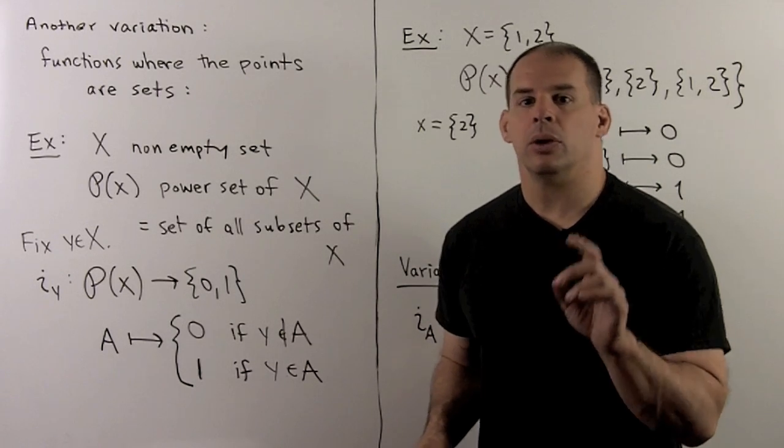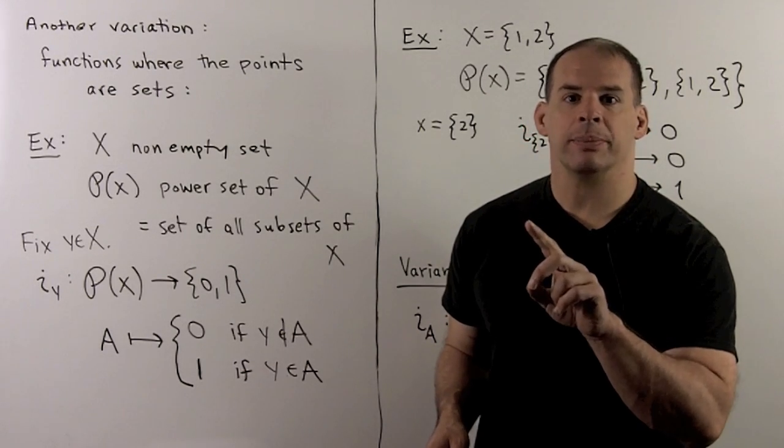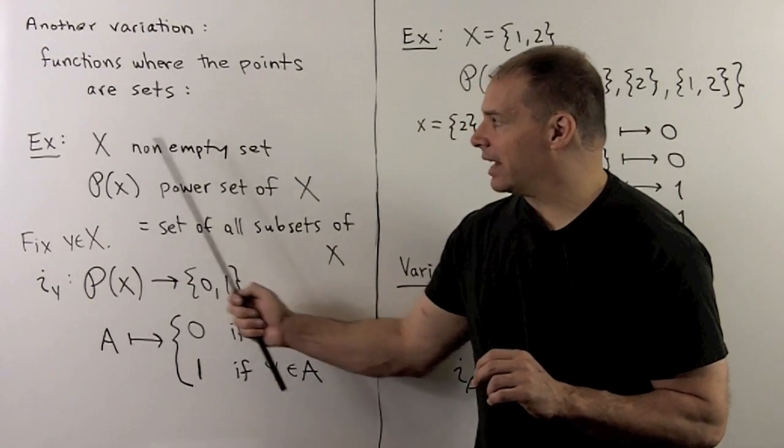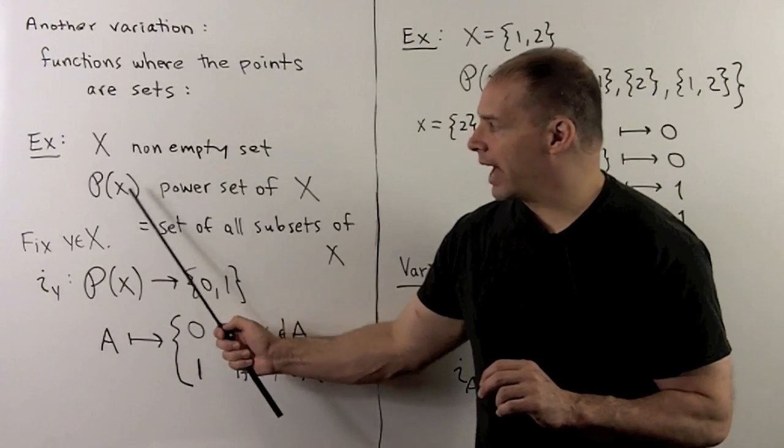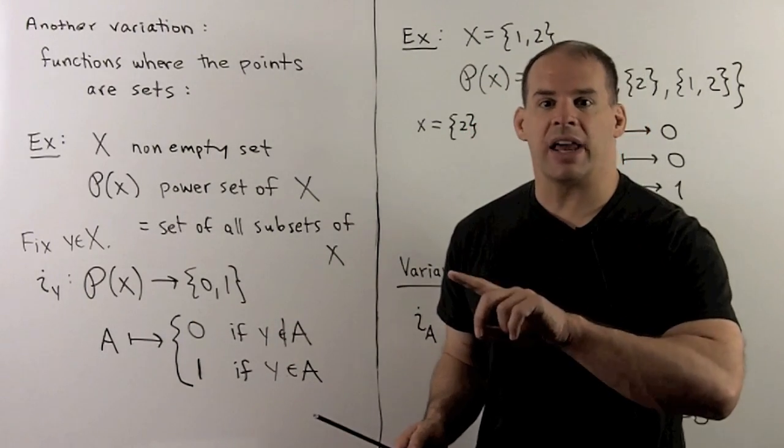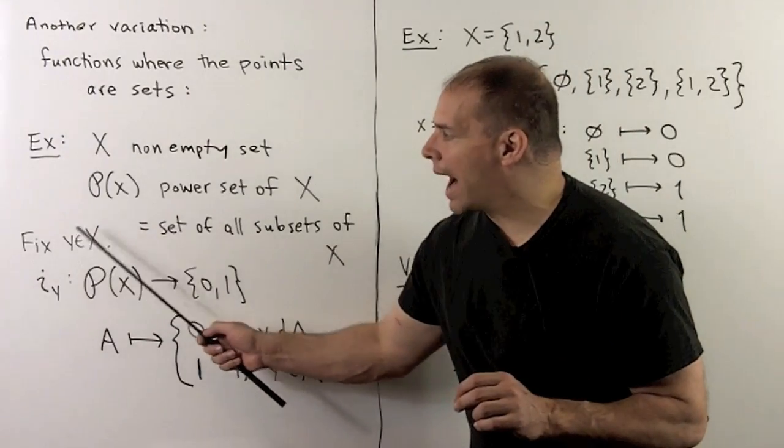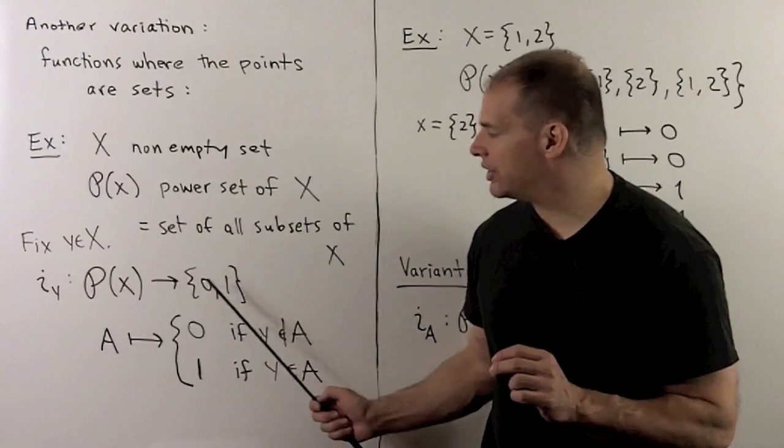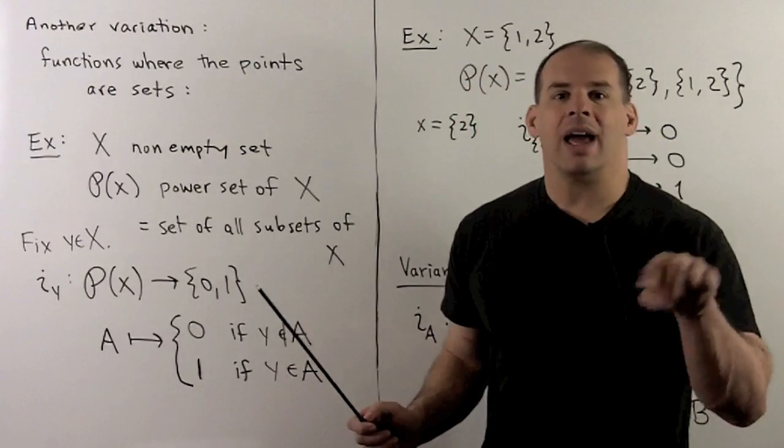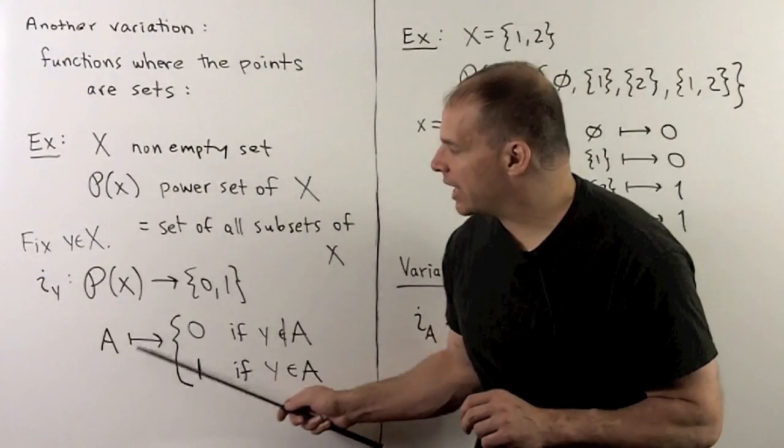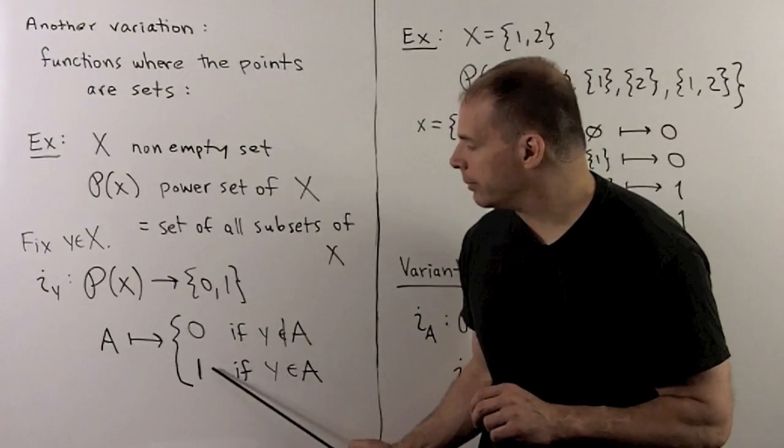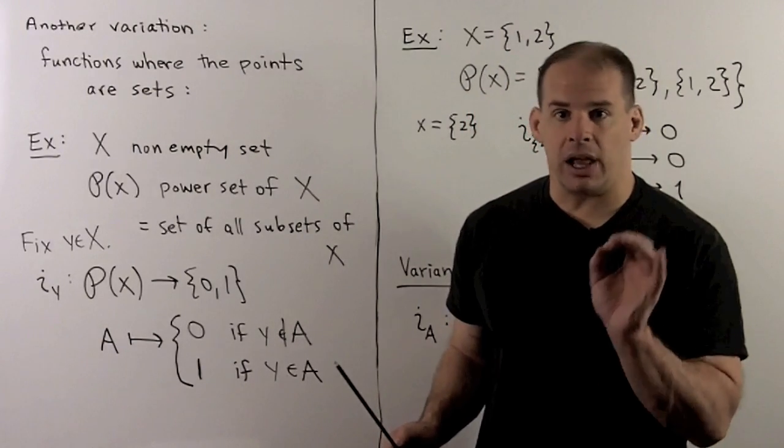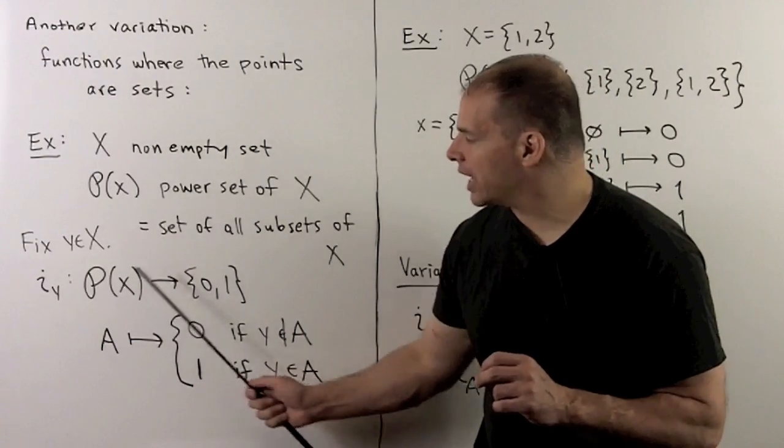Another variation. We can consider mappings where the sets have as their elements sets themselves. So, for instance, if I take x to be any non-empty set, I'll have P of x, the power set of x. This is the set of all subsets of x. I'll fix an element y in x. We'll define i sub y as the mapping that carries the power set to the set 0, 1. So, what i sub y will do, for each subset of x, we send it to either 0 or 1, goes to 0 if y is not an element of a, goes to 1 if y is an element of a. So, this carries our power set to 0, 1.